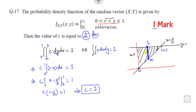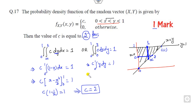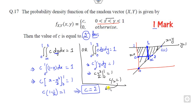The concept is that you must draw the graph to find the limits. Alternatively, you can take a horizontal strip: X goes from 0 to Y, and Y goes from 0 to 1. With C outside, integrating X from 0 to Y gives Y, and integrating Y from 0 to 1 gives C times Y²/2 evaluated from 0 to 1, which is C/2 equals 1. Again, the answer is C equals 2.